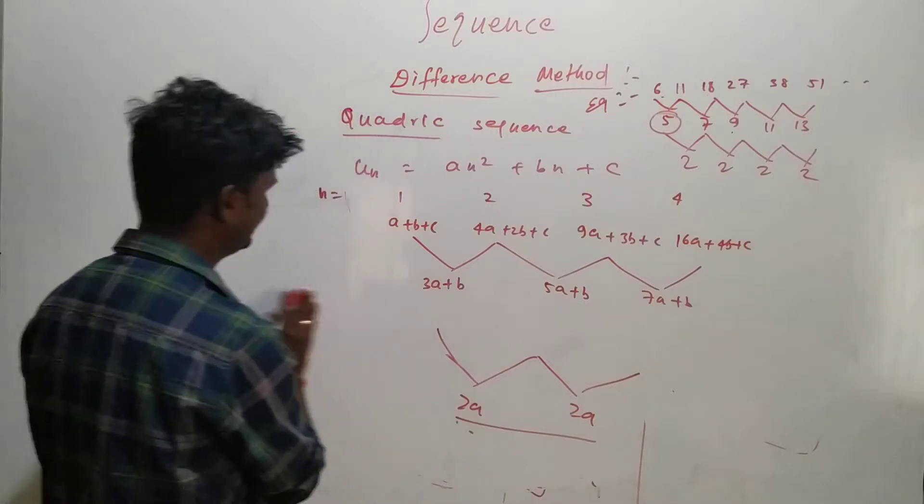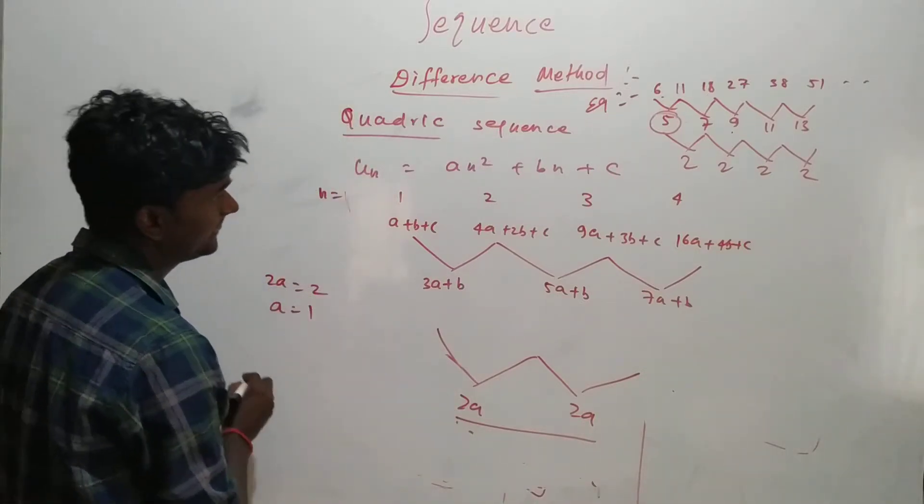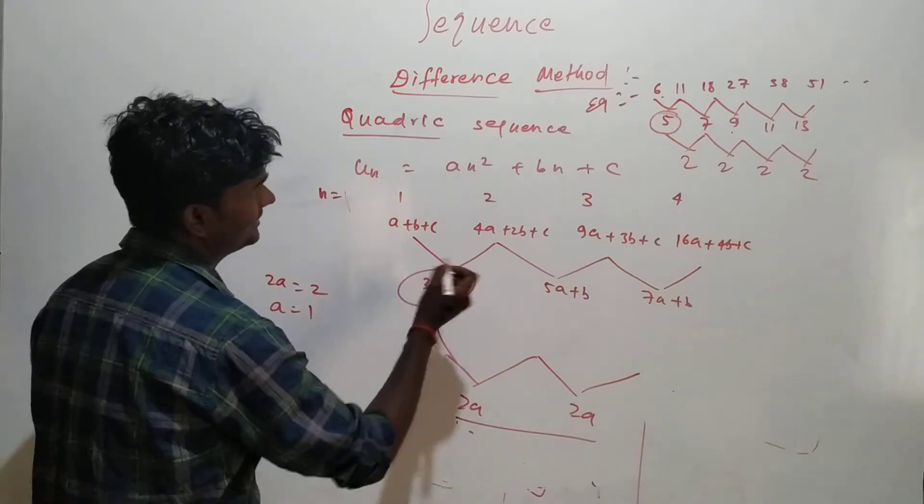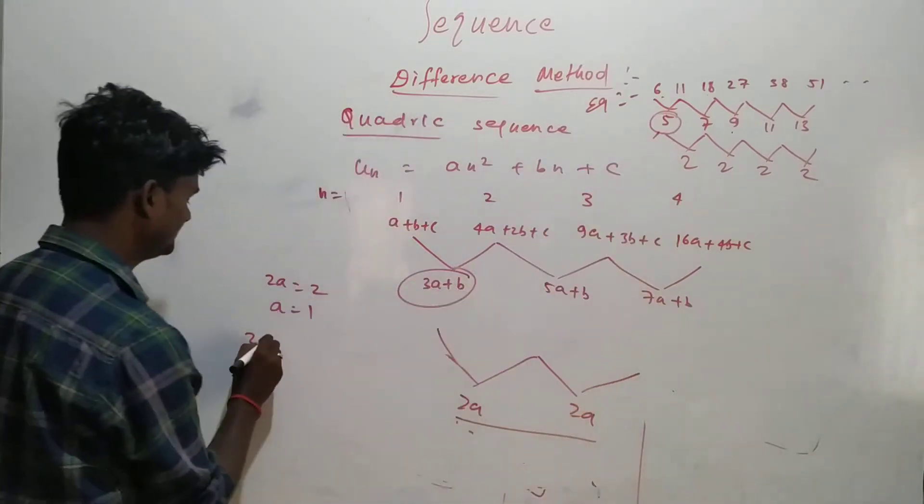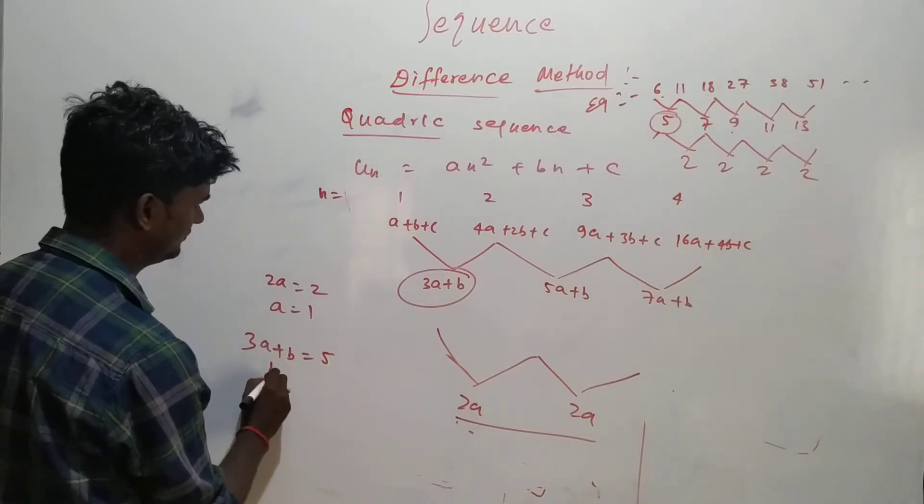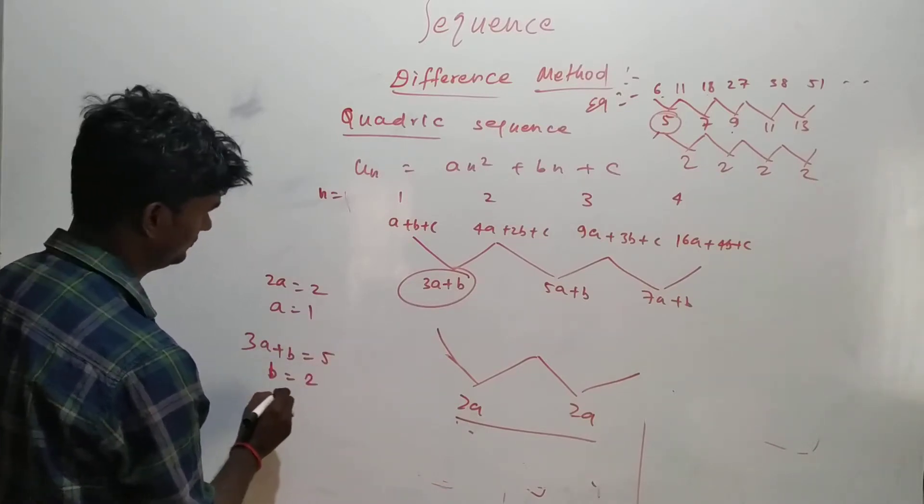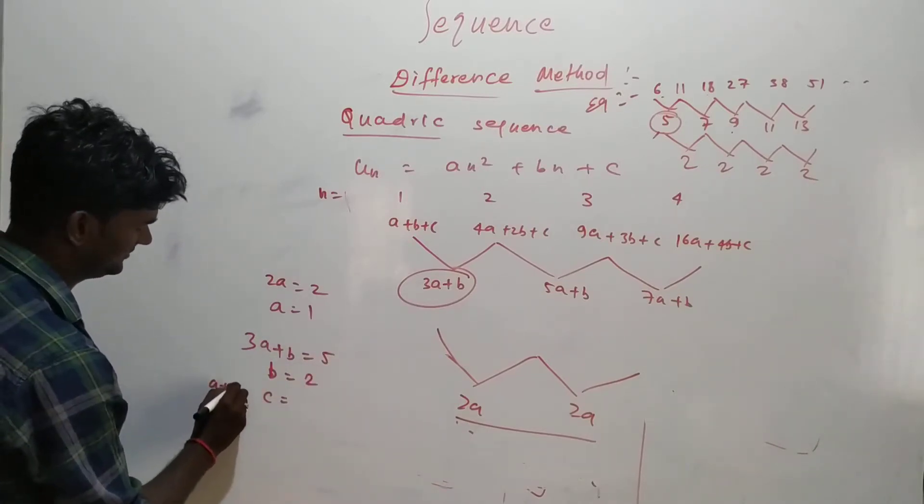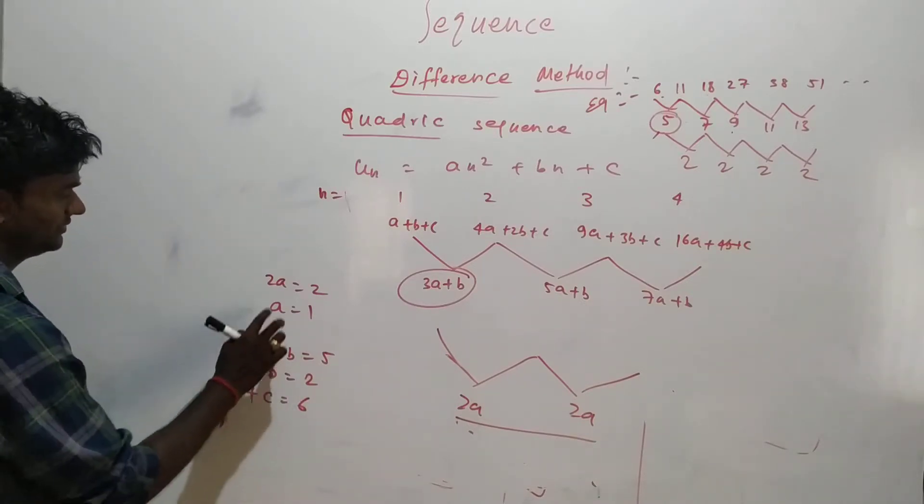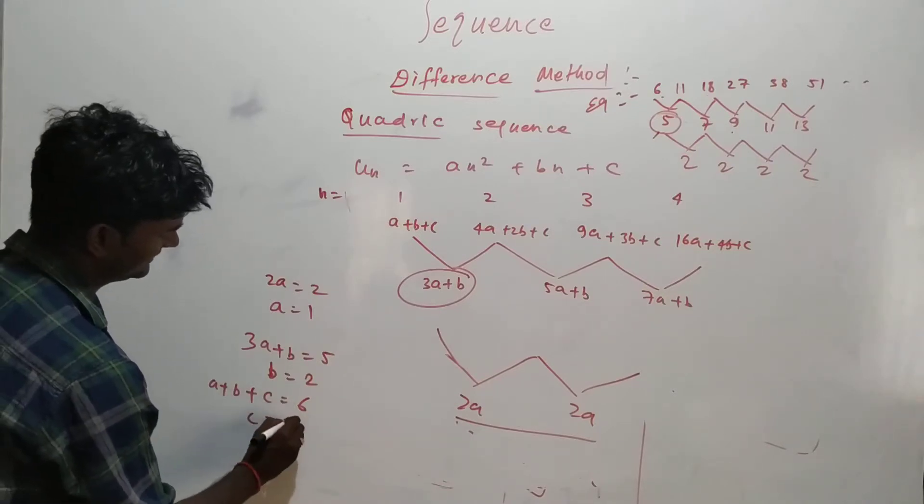So now you have to equate that. If you're getting 2a equal to 2, so a will be equal to 1. And 3a plus b, this will have to equate with this value, so 3a plus b is equal to 5, so b will be equal to 5 minus 3 which is 2. For c, we have a plus b plus c equal to 6. So a plus b is basically 2 plus 1 which is 3, and c will be equal to 6 minus 3, which is 3.